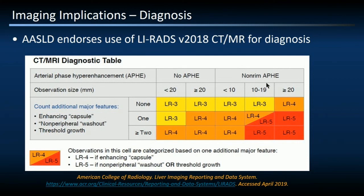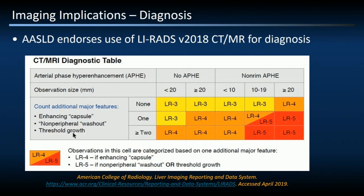The conundrum comes with smaller lesions — 10 to 19 millimeters. A 10-to-19-millimeter hypervascular lesion with at least two major features has diagnostic criteria for LIRADS 5. If it's 10 to 19 millimeters with only one additional major feature, you need to look critically at which feature is present. The enhancing capsule alone is not sufficient to call it LIRADS 5 — it gets triaged to LIRADS 4. However, intralesional washout or threshold growth each individually qualify as LIRADS 5 criteria.